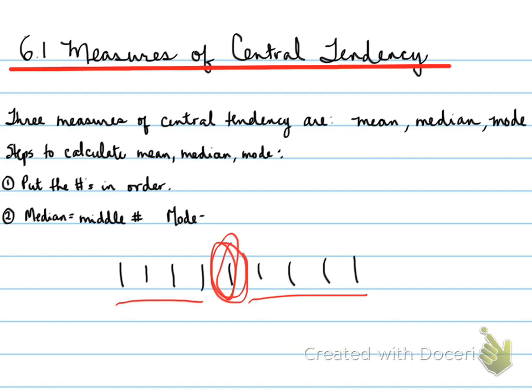Now it's okay if it's a small number, but let's say you have a hundred pieces of data and you want to find the middle. You would take 100 plus 1, divide by 2, and that gives you 50.5. That means your middle data is between the 50th and 51st values, so you would add those two numbers and divide by two. We'll be looking at more examples of this in our lesson.